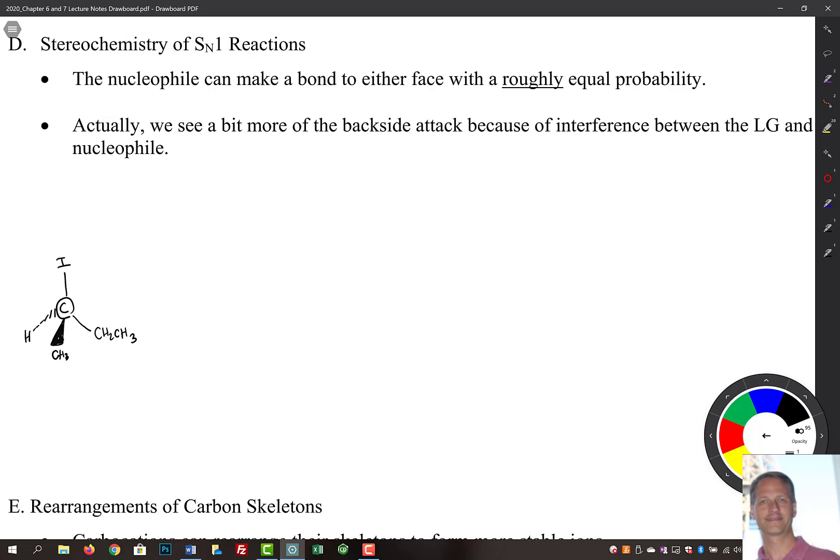Now the first step of this reaction, if you remember, is that we're going to have our leaving group leave. That's our first step. So we have a loss of our iodide. This is our RDS, step number one.